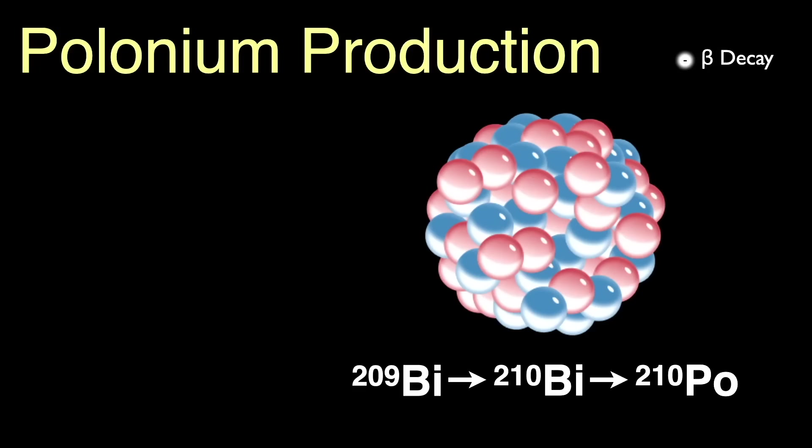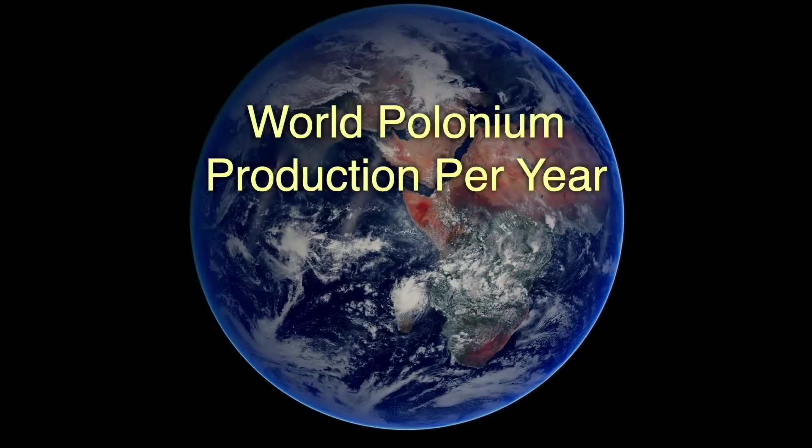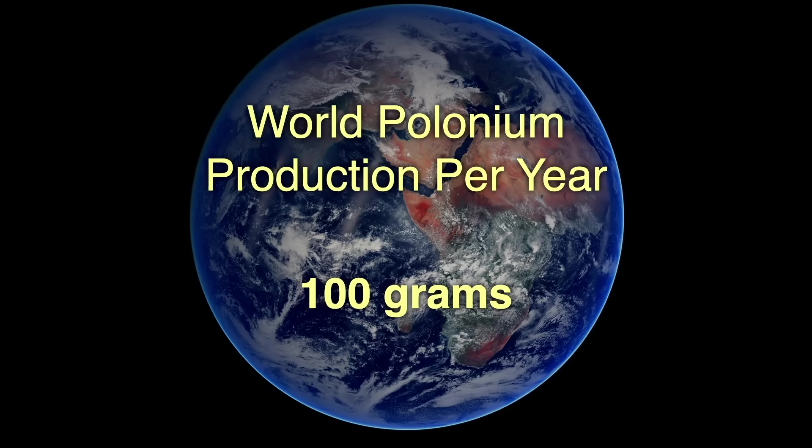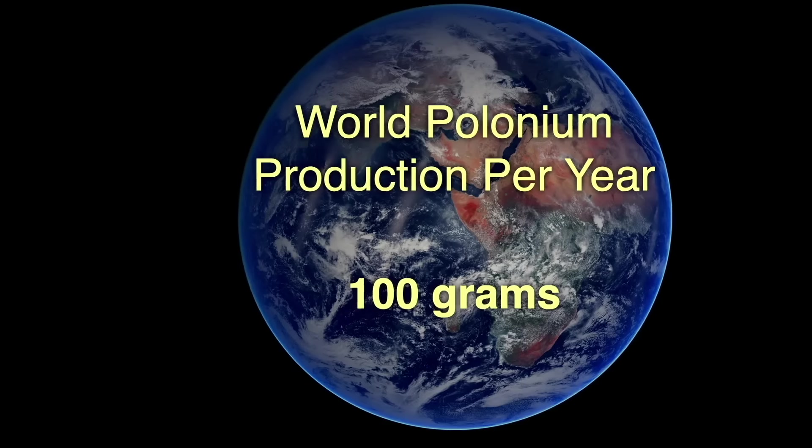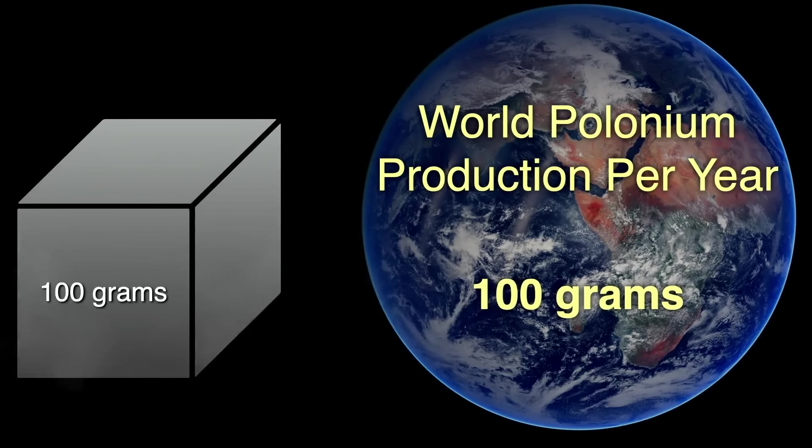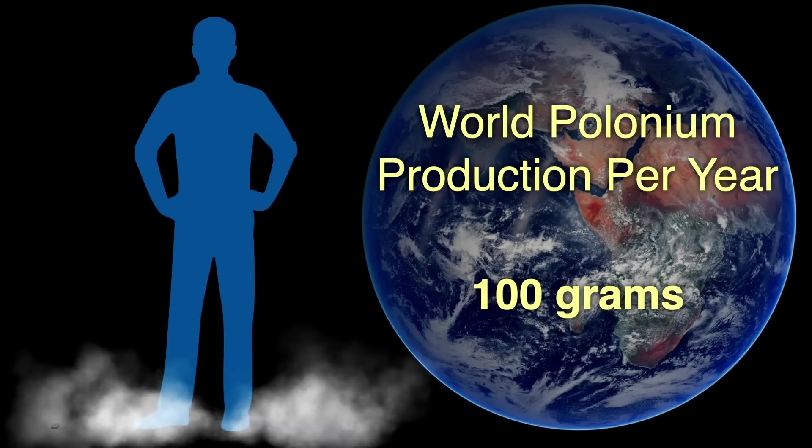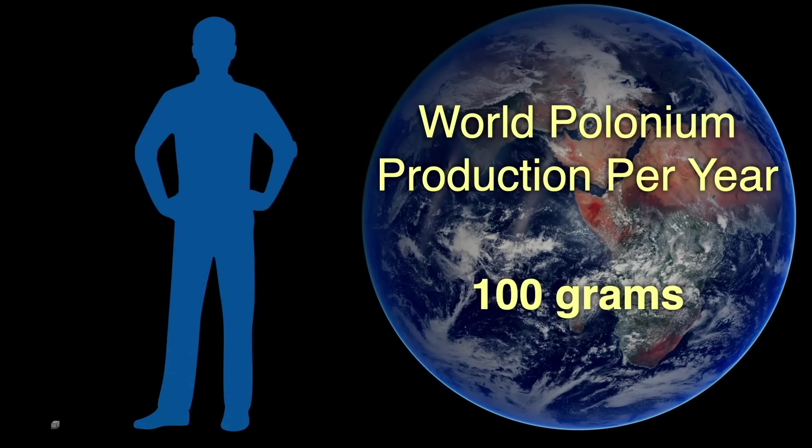Still, this is a slow, inefficient process, only producing small quantities. Estimates are, the world produces around 100 grams of polonium per year, almost exclusively in Russia. 100 grams of polonium would be a cube only 2.22 centimeters on a side, less than an inch. And that's the entire world's production.